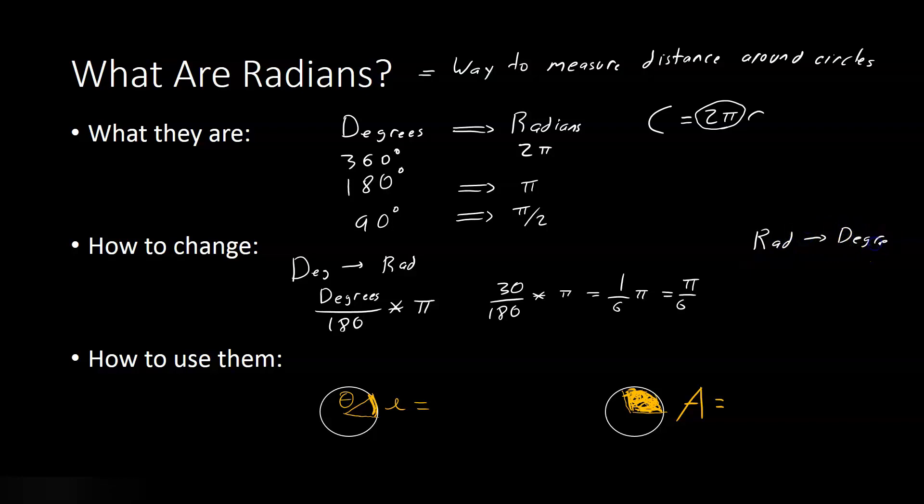If we want to go back from radians to degrees, we just do the opposite. We'll say times 180 over pi. We could cancel out the pi's. This gives us 180 over 6, which is, indeed, 30 degrees. So, now you could go back and forth between them.